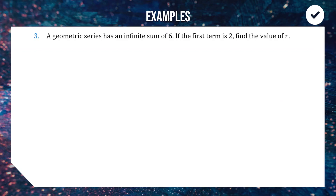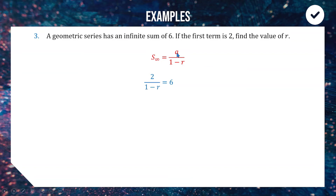Next we use this formula to work backwards. A geometric series has a limiting sum of six, and the first term is two — find r. We know a/(1 − r) = 6 and a = 2, so we have 2/(1 − r) = 6 and we solve this equation to find r.